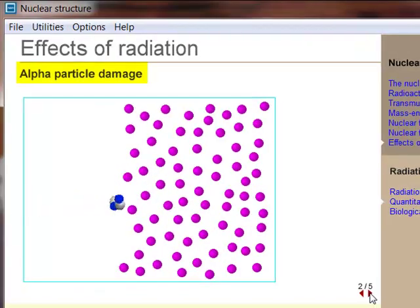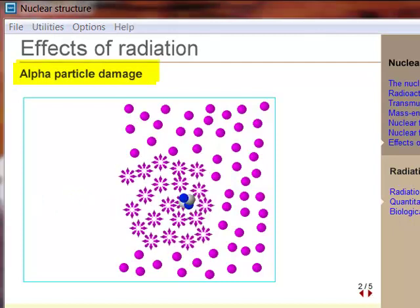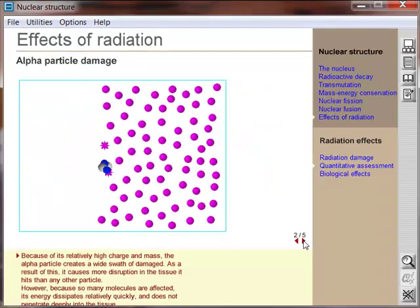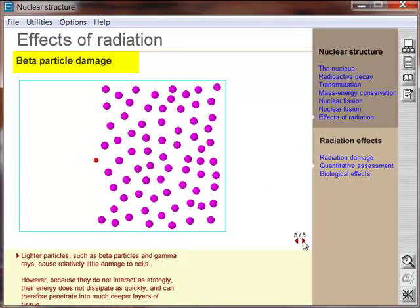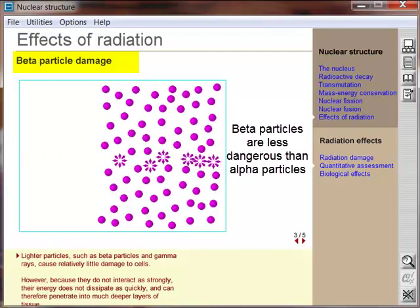Because of its relatively high charge and mass, an alpha particle creates a wide swath of damage. Alpha particles cause more damage than other particles. Lighter particles, such as beta particles and gamma rays, cause relatively little damage to cells when compared to alpha particles.